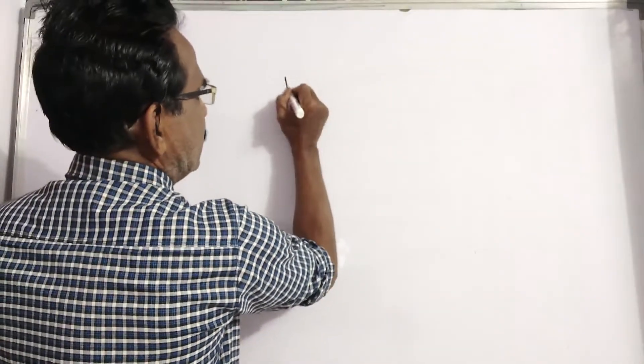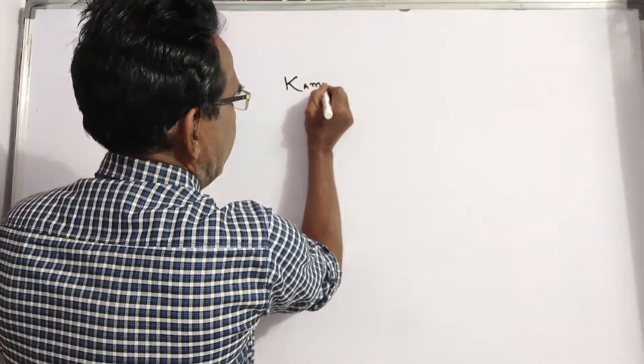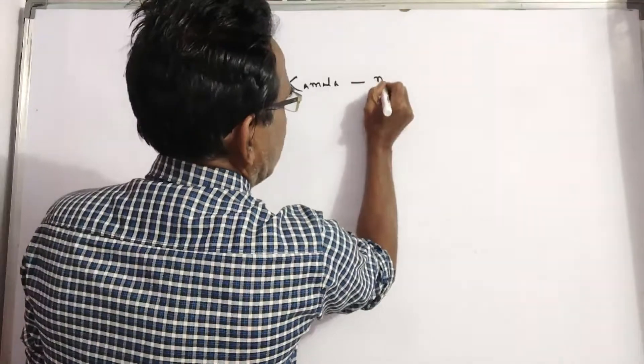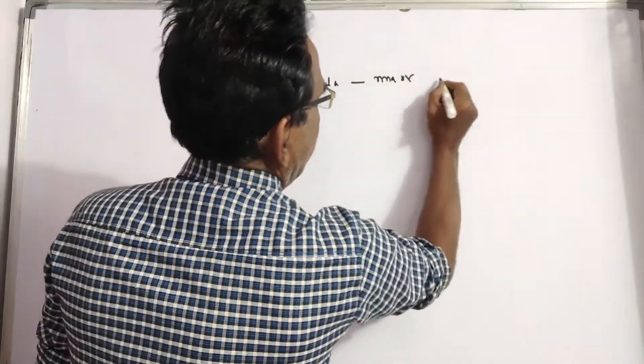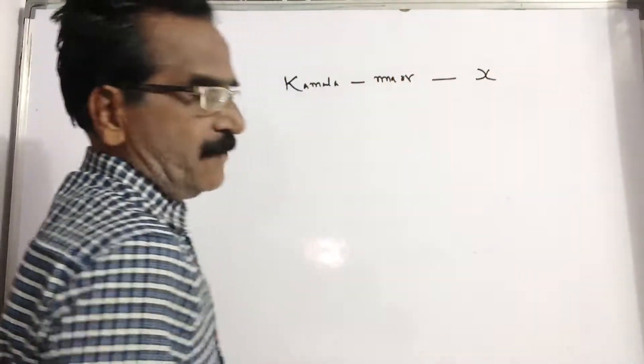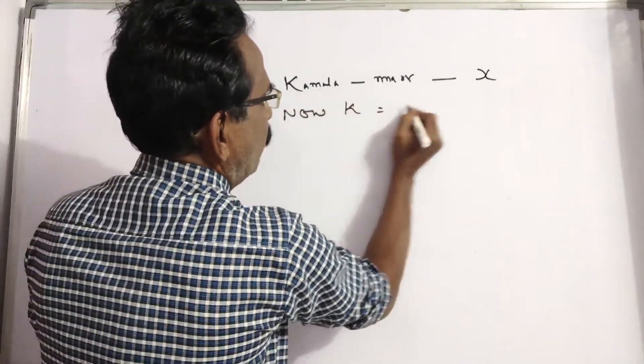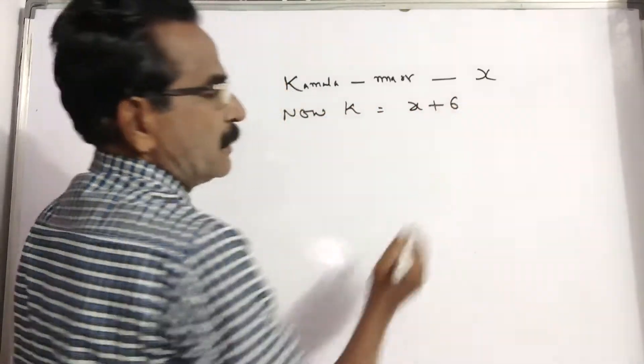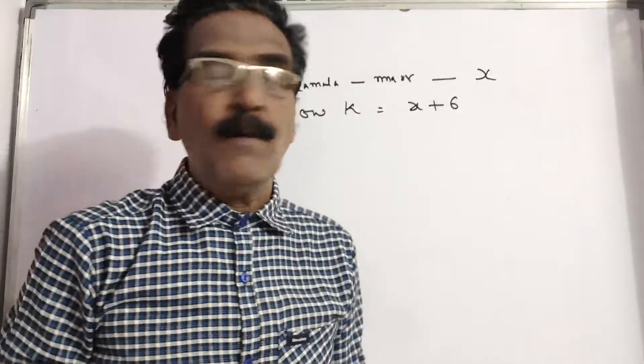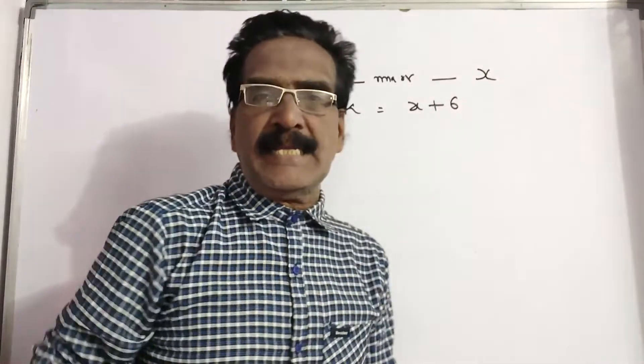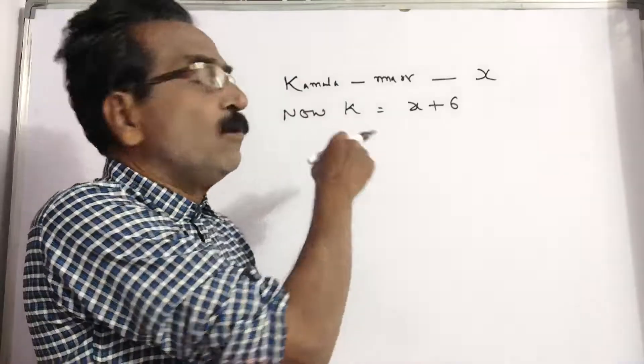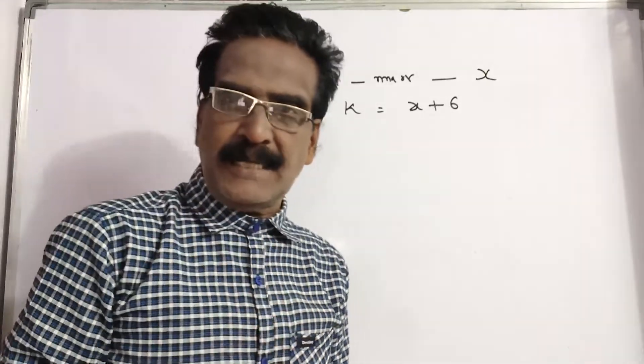See, Kamala's age at the time of marriage, say X. So now Kamala will be X plus 6, because Kamala was married 6 years ago. So at the time of marriage her age was X, so now Kamala will be X plus 6.